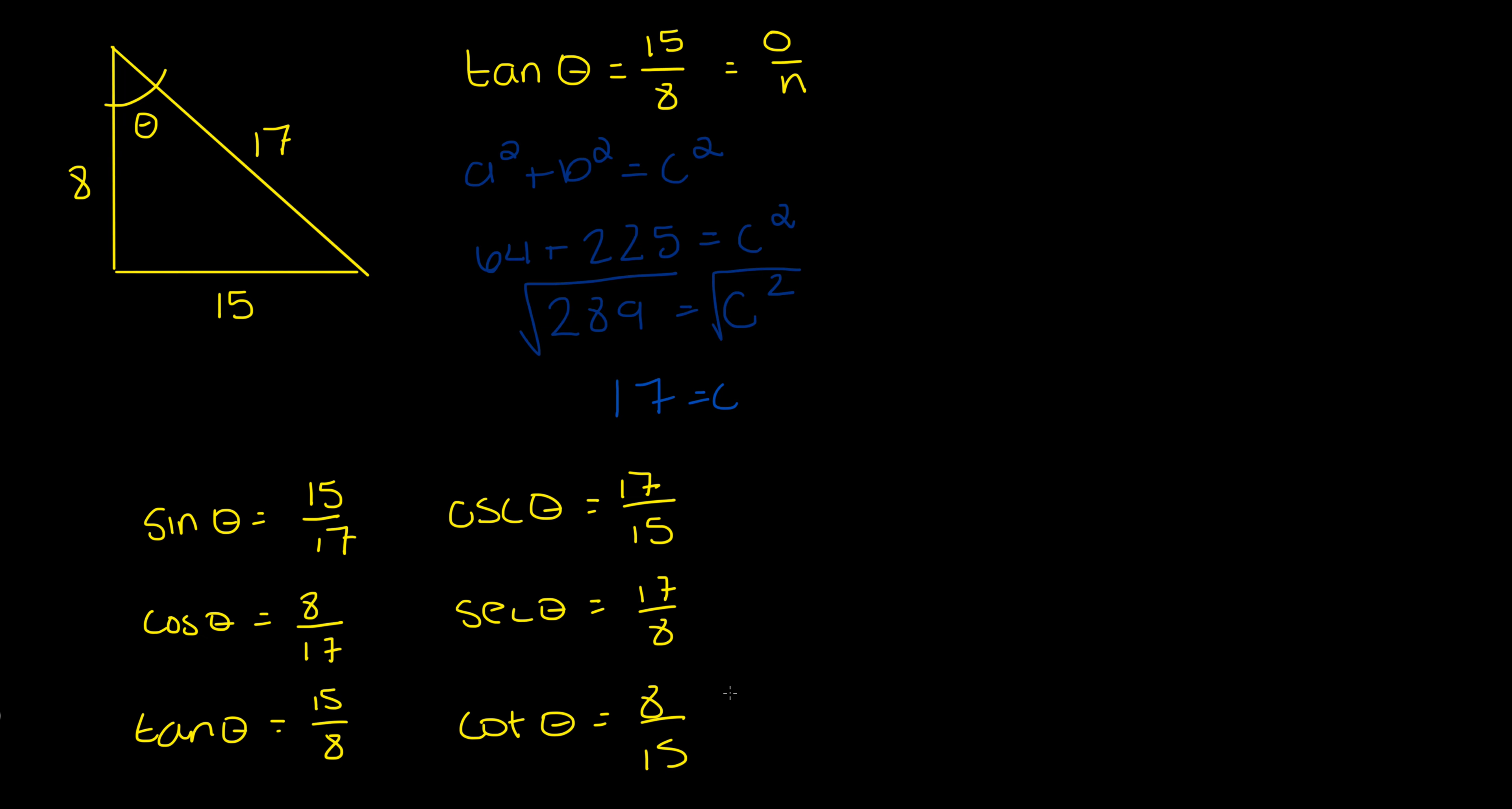All right so there we go. We can use one trigonometric ratio to find all the other trigonometric ratios by identifying which one we're using - if we have hypotenuse, adjacent, or opposite - and by also knowing Pythagorean's theorem.